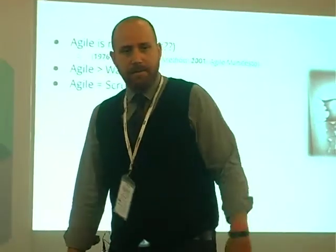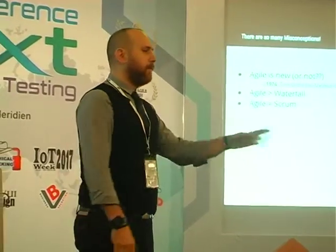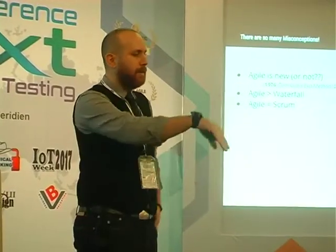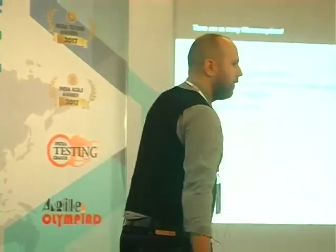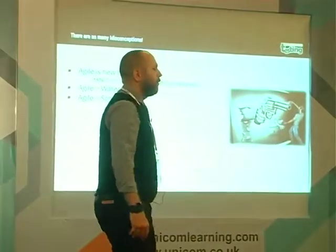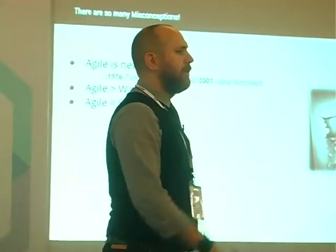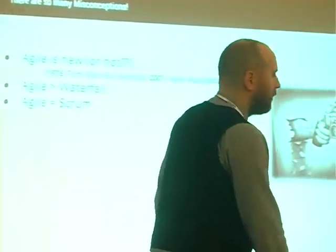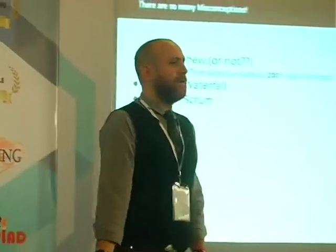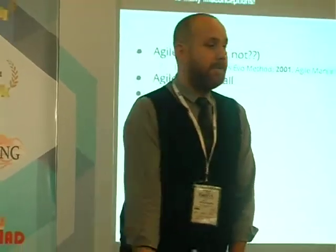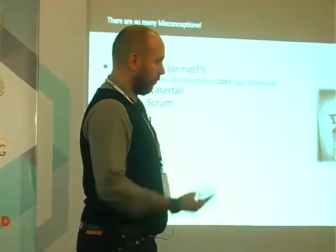Another myth is that people think agile is just Scrum: we'll have eight people in a team, no titles, we'll collaborate, and we'll have two-week release cycles called sprints. But this is not the case. There are many methods under the agile manifesto — more than 50 methods, actually. Scrum is just one.